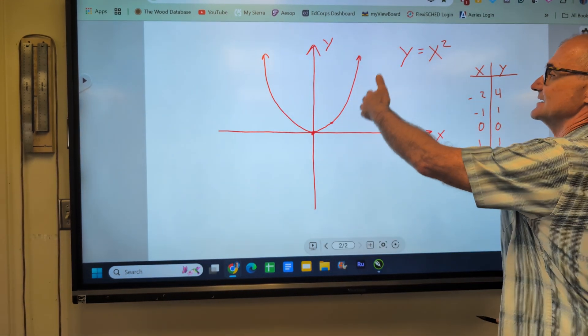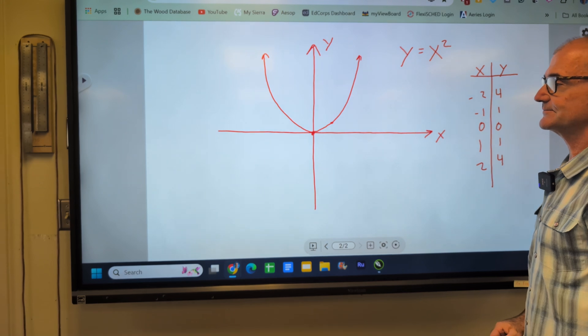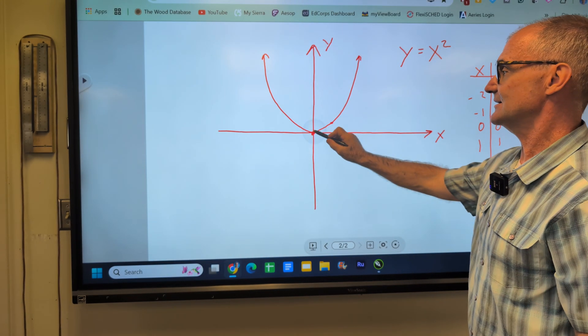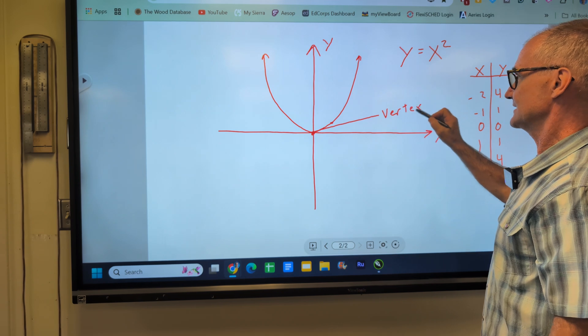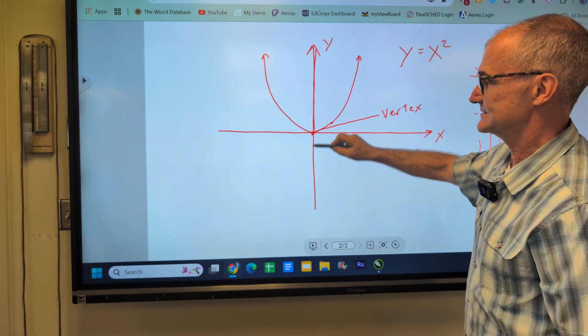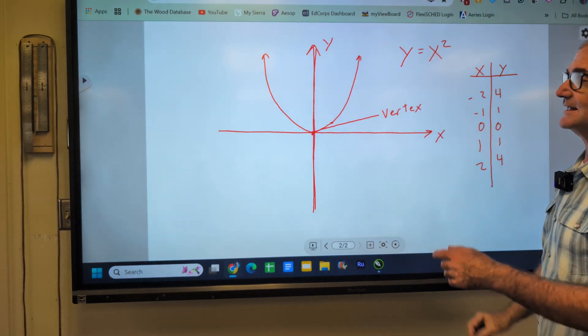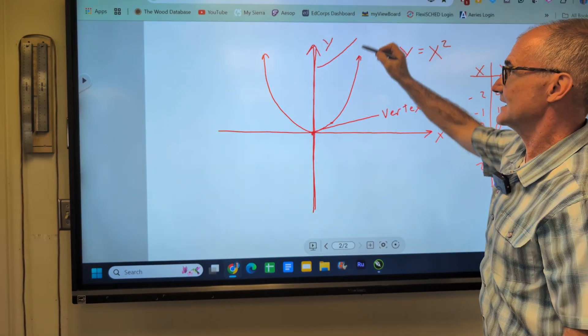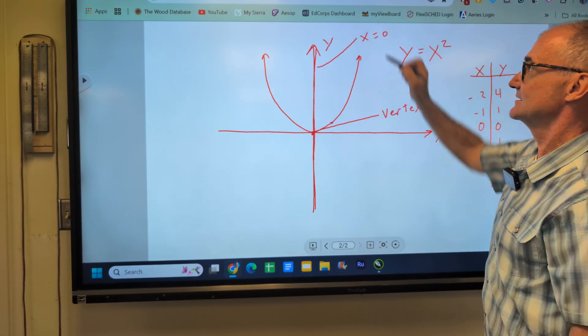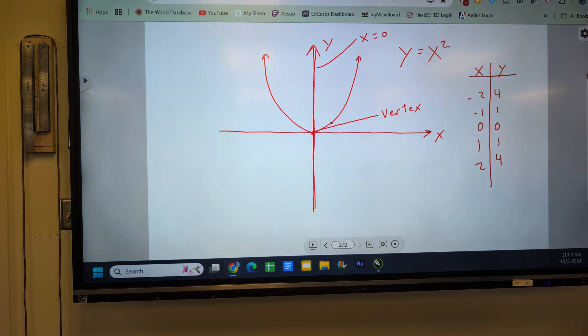It's increasing at an increasing rate. This point right here is called the vertex. And the line down the middle is the line of symmetry. The line of symmetry needs to have an equation. It's crossing the x-axis at zero, so that line of symmetry would be x equals zero.